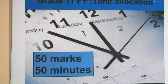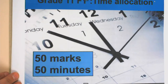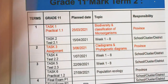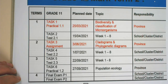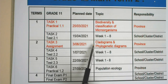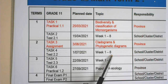Your mark allocation is 50 marks in 50 minutes. If your teacher feels one of the case studies or sections to read may be a little bit longer, they can increase it to 60 minutes depending on your situation. Your test will cover the work completed from week one until week eight — that is what is used to set your paper.